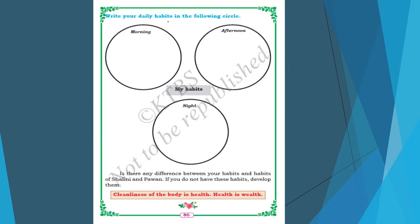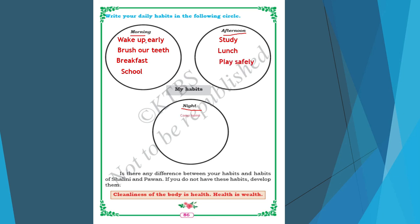Now, write your daily habits in the following circle — what you do in the morning, afternoon and at night. In the morning: wake up early, brush teeth, have breakfast, and go to school. In the afternoon: study in school, have lunch, and play safely. At night: come home, wash hands, legs and face, have dinner, and then sleep.